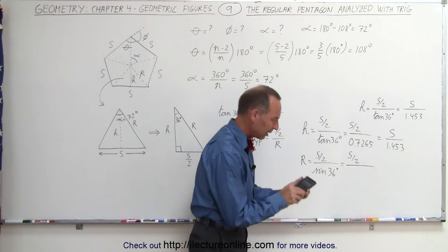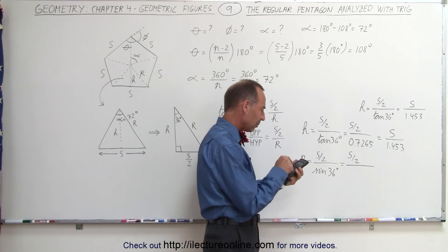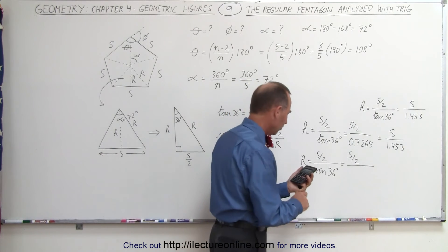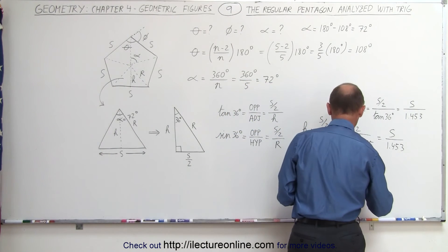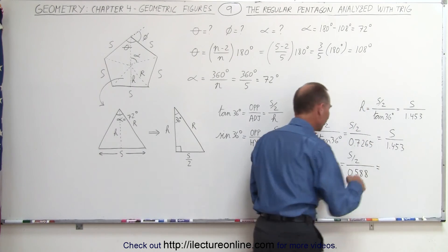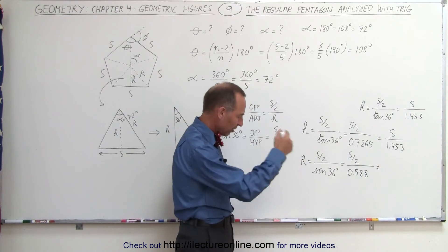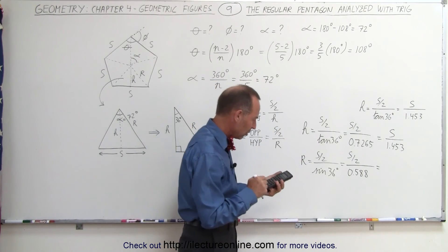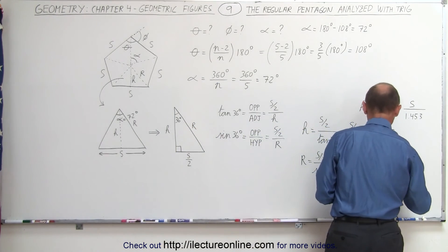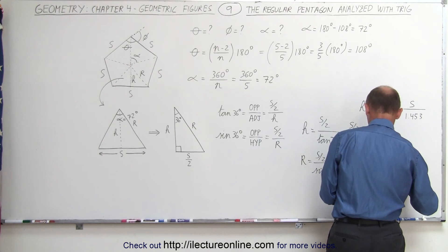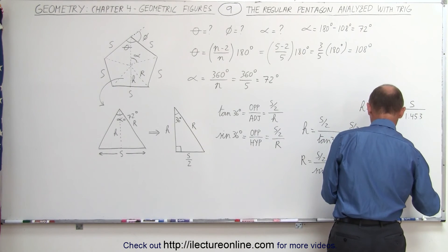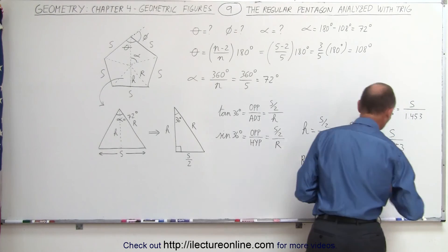and using a calculator, you punch in 36, then you punch the sine button, and you get 0.588. And then if you multiply both sides by 2, the top and the bottom, so times 2, you get this is equal to s divided by 1.1756 to 4 decimal places.